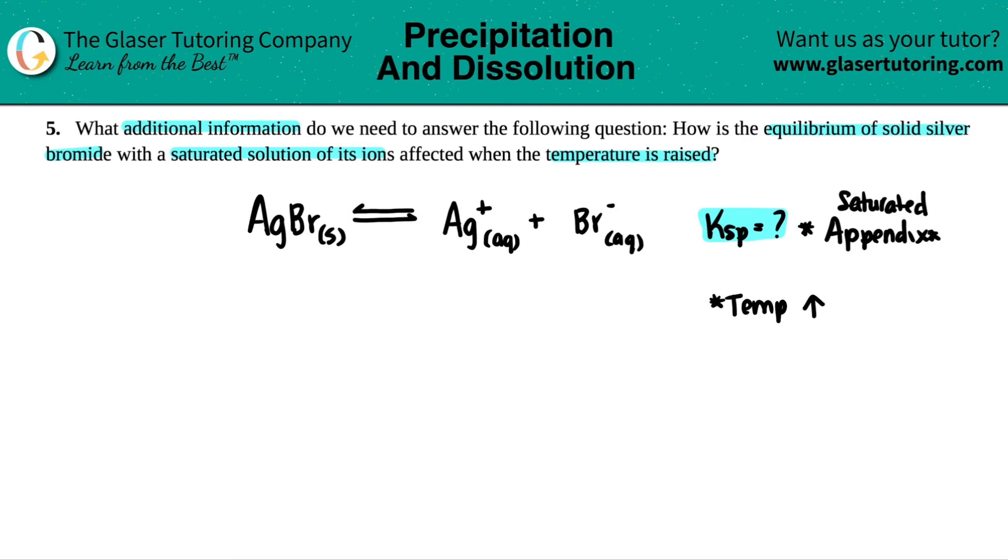Only then can you compare equilibrium. So you could say we would need to know the solubility product, which is SP, solubility product. You could just say you need to know the KSP after the temperature.